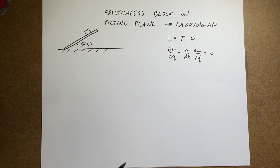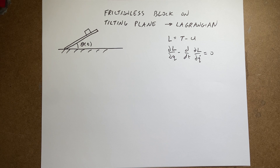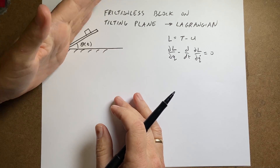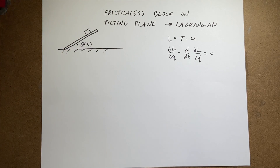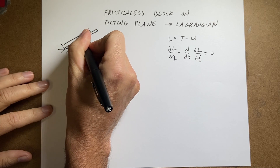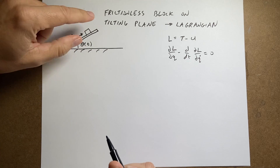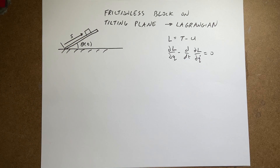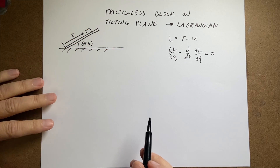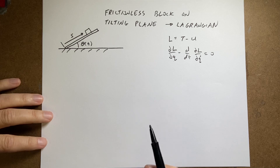The first thing we need to do is find how many degrees of freedom we have — how many ways could I set up the situation? The answer is just one. The block can only be at one place. Yes, the plane is moving, but I'm not in control of that — that's some given function. So I just need one coordinate to describe where the block is. I'm going to pick S, the distance up the plane. If I know S in time, and I know the function theta, I know exactly where the block is.